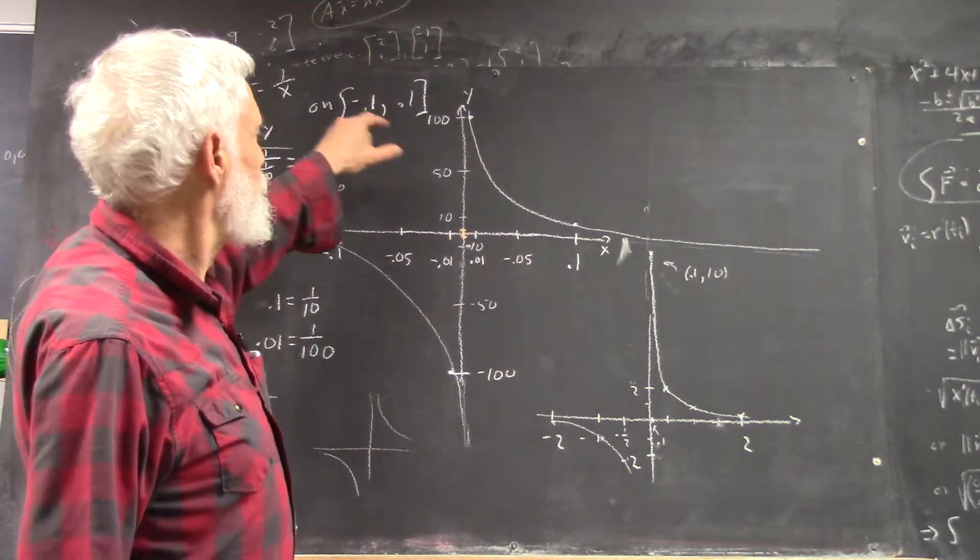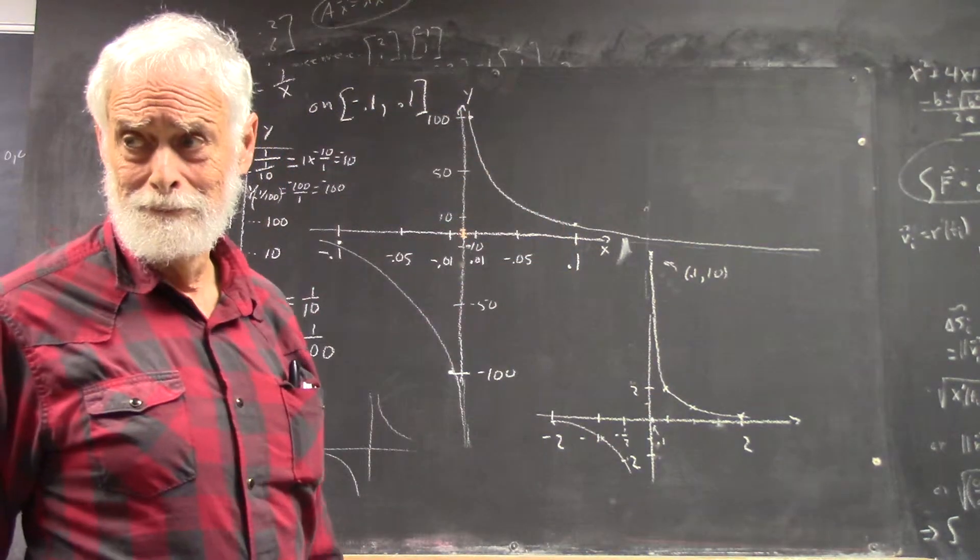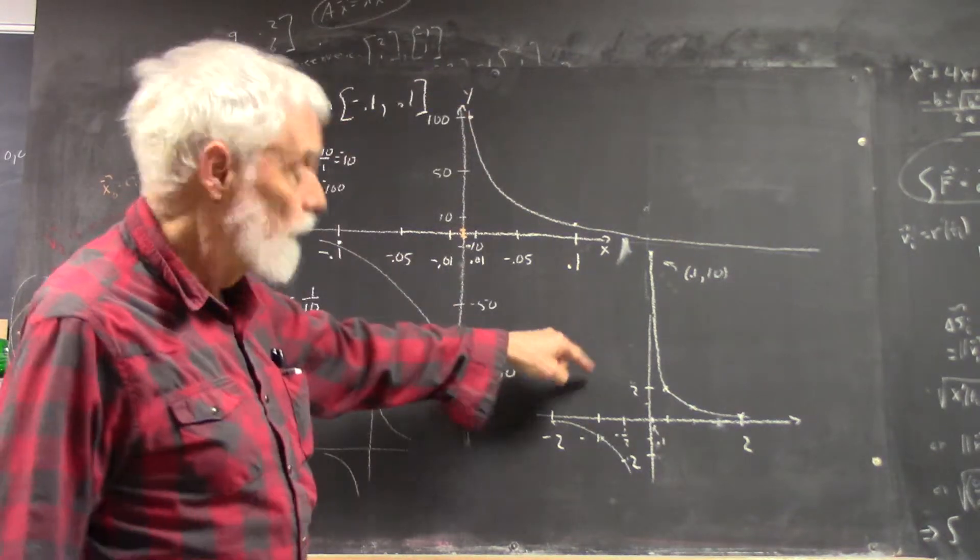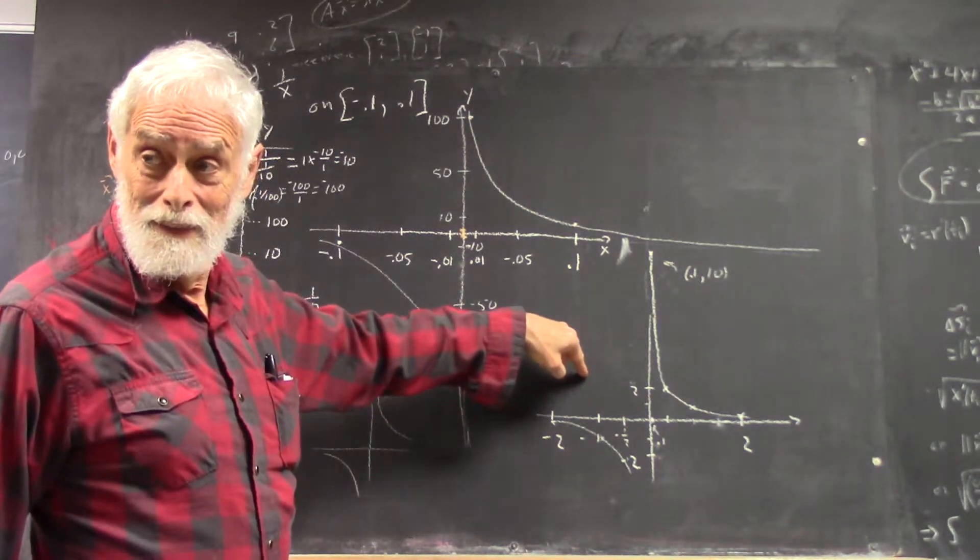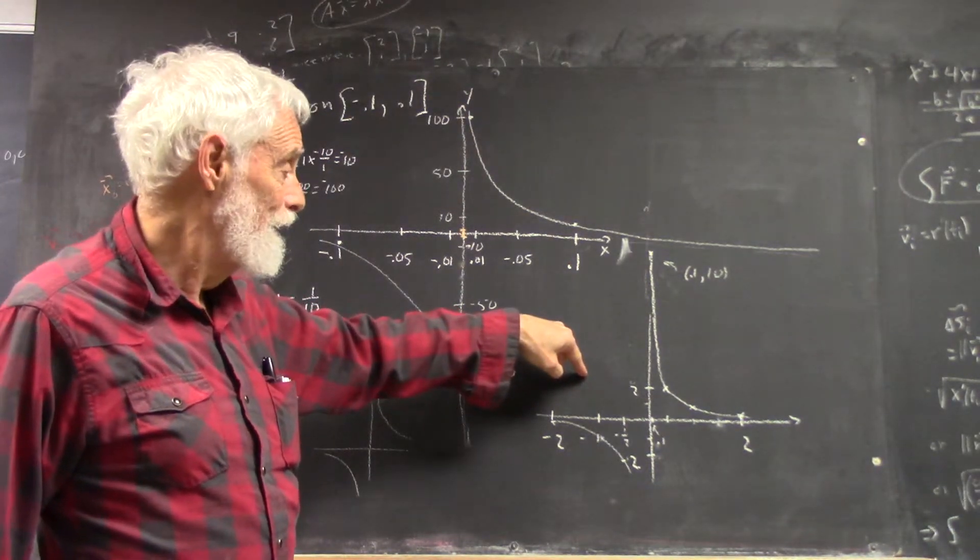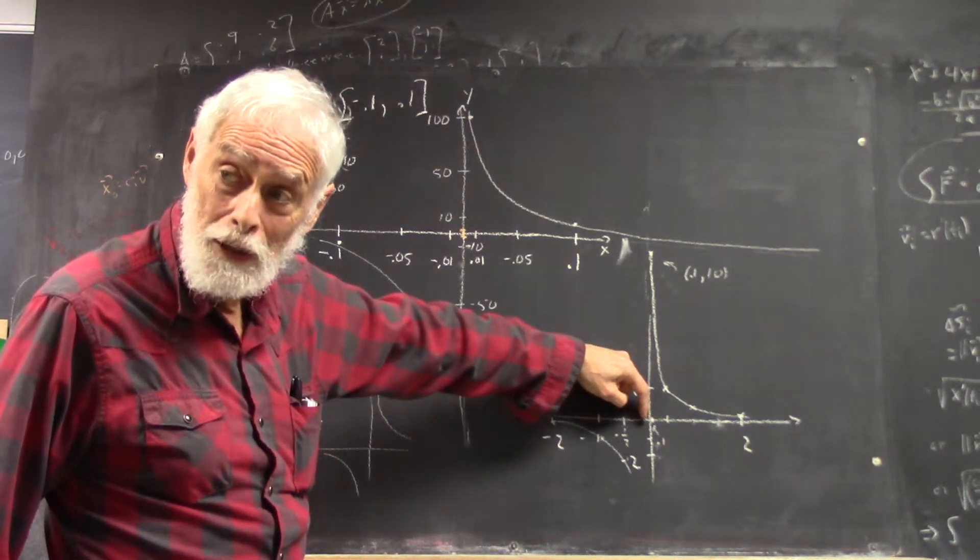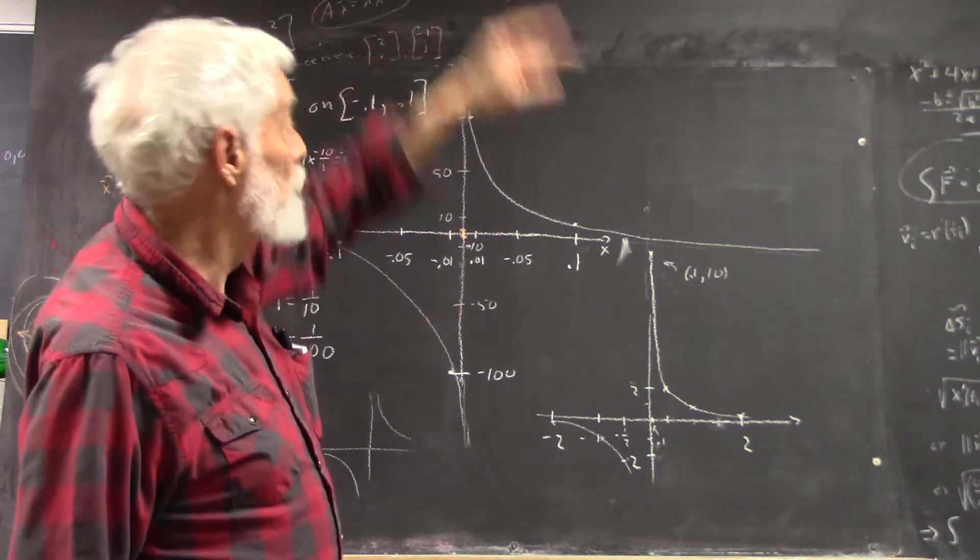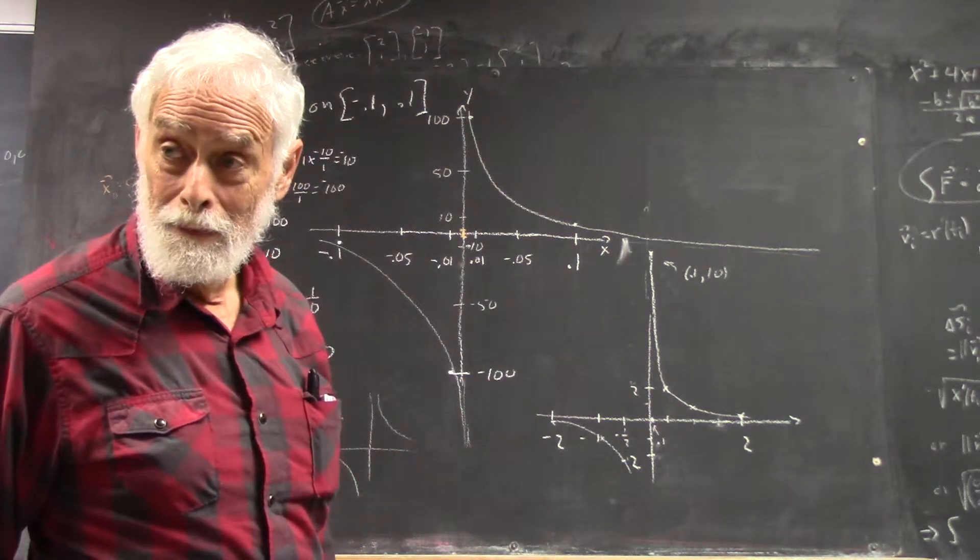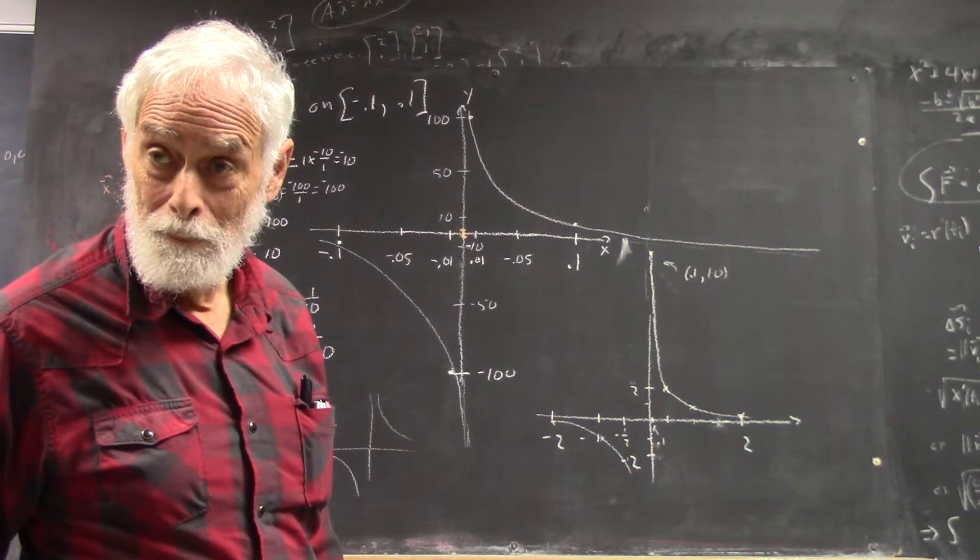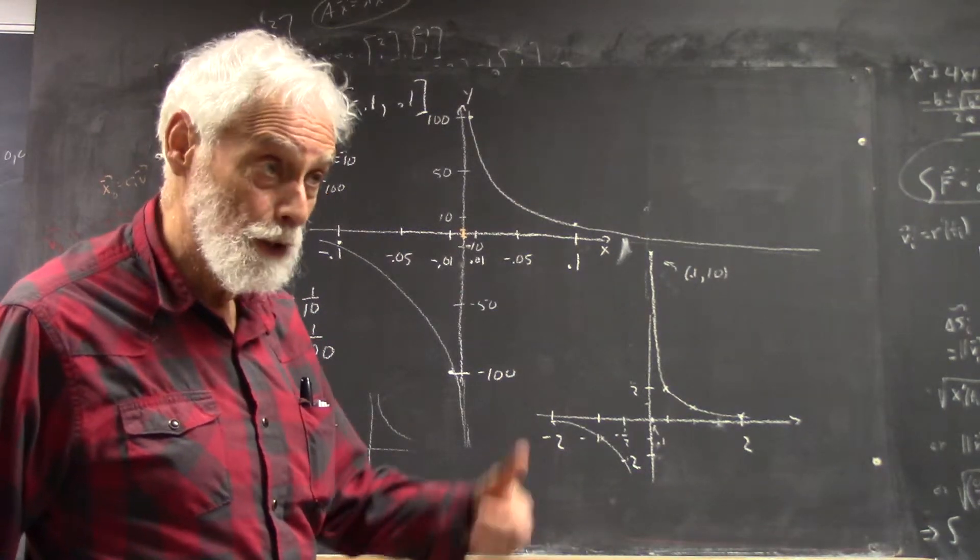Now, where is point (0.01, 100)? Where's this point on this graph? Well, you're going to get almost microscopically close to the origin, right? And you're going to be up through the ceiling. Does that make sense? Do we understand that?